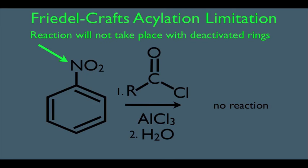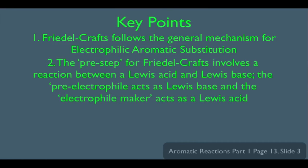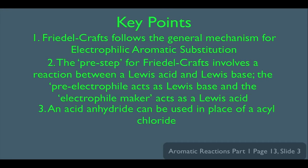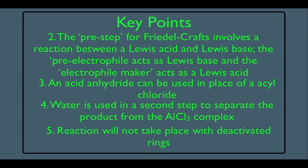In summary, the key points are: one, Friedel-Crafts acylation follows the general mechanism for electrophilic aromatic substitution; two, the pre-step involves a Lewis acid-base reaction where the pre-electrophile is the Lewis base and the electrophile maker is the Lewis acid; three, an acid anhydride can replace an acyl chloride; four, water is used in a second step to separate the product from the AlCl3 complex; and five, Friedel-Crafts acylation will not occur with deactivated rings.